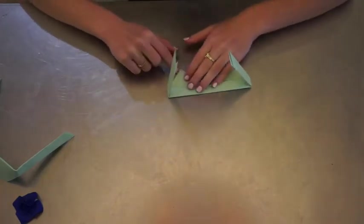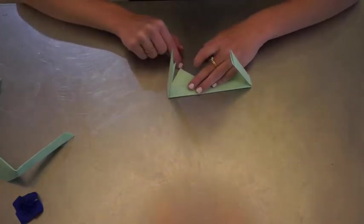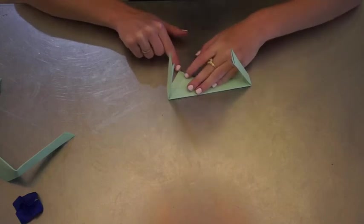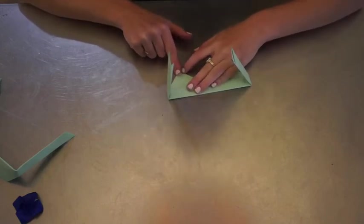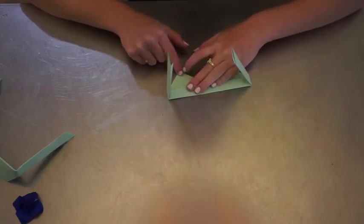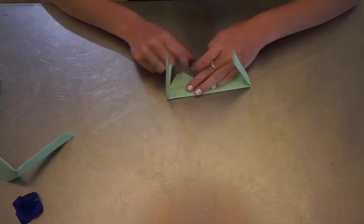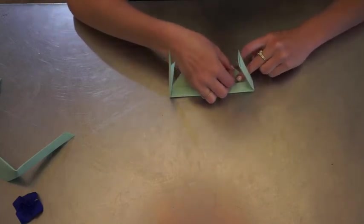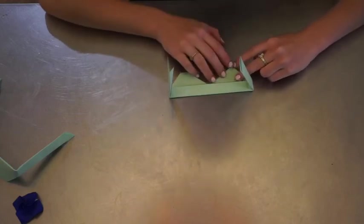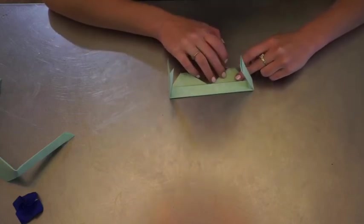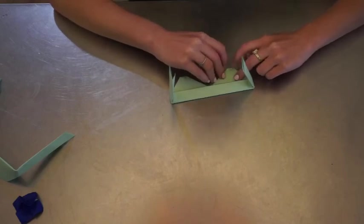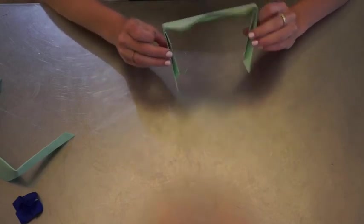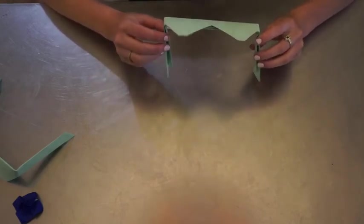Almost done. The last step is to just take the corners, the bottom corners of these triangles here, and fold them just a little bit so you've got a flat edge. This is another step that's pretty subjective, just as far as you think will look good, just like that.